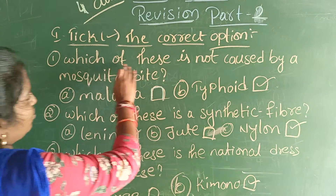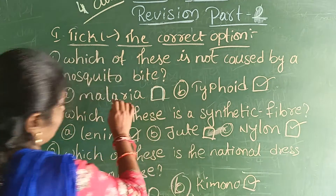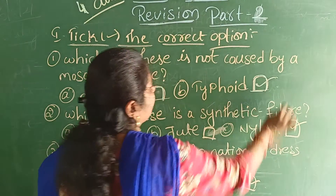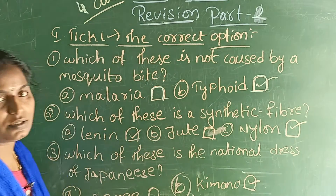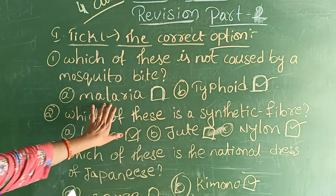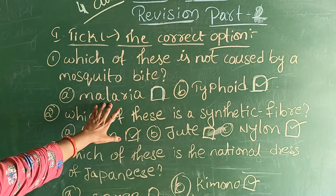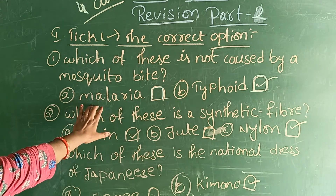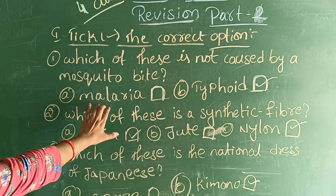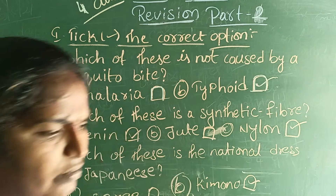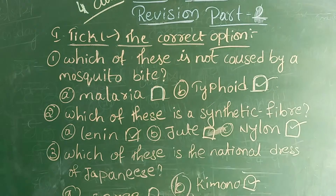Which of these is not caused by mosquito bite? Typhoid is not caused by mosquito bite. If you get a mosquito bite, you will get which disease? Malaria. So mosquito bite causes malaria. Typhoid is not caused by mosquito bite.